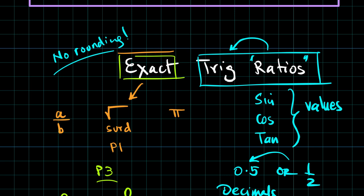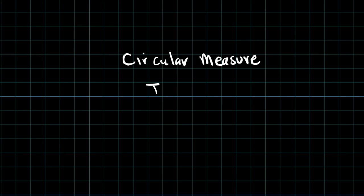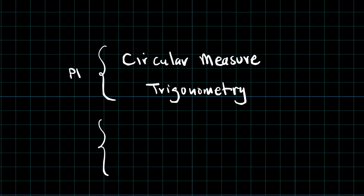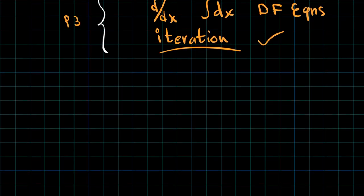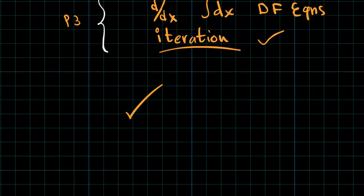That is some of the basic trigonometry needed for circular measure and for trigonometry from the perspective of P1. At P3 we'll be using it in differentiation, integration, differential equations, and in the topic known as numerical solution of equations, popularly termed as the iterative process or iteration. That's all from my side — until the next class, take care.